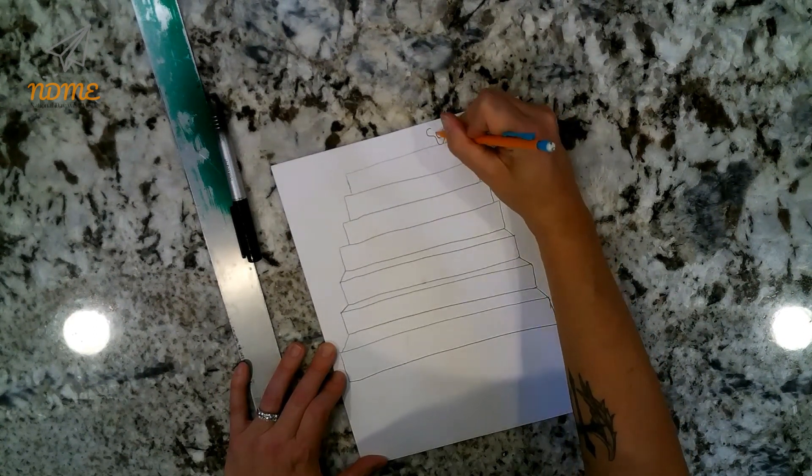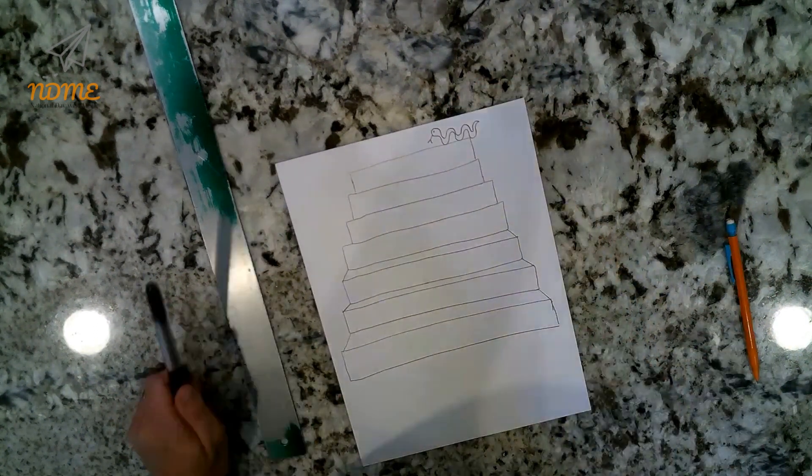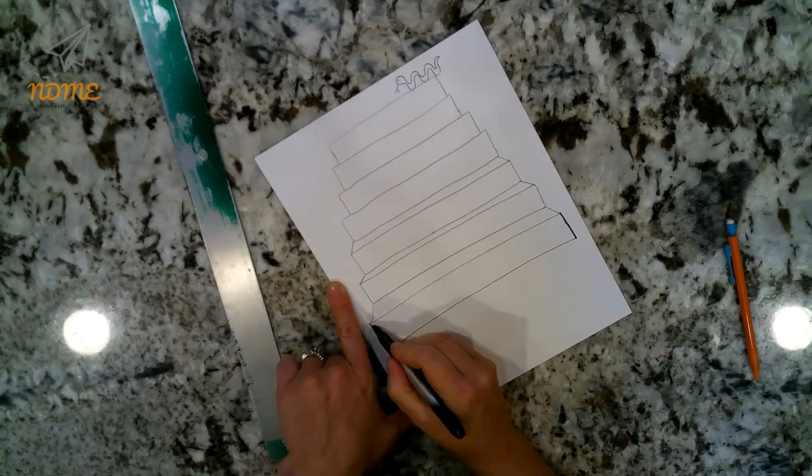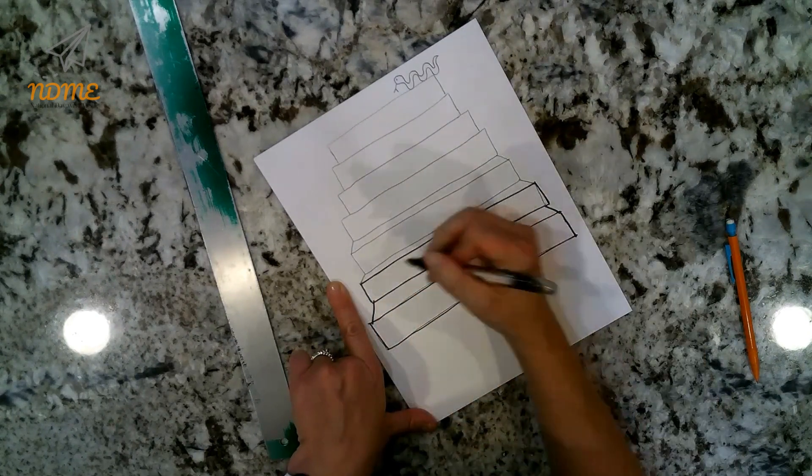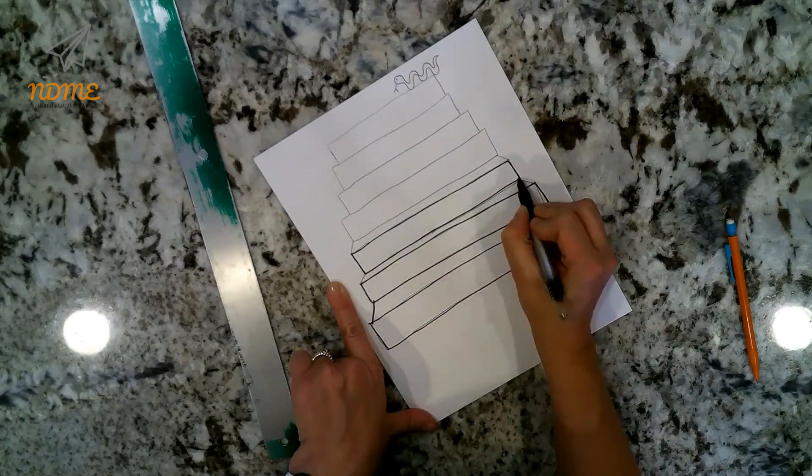Now, because this is me focusing on my fear of snakes, I went ahead and drew a snake at the top as what my goal is as I climb up the stairs. And then I went ahead and outlined the stairs with black marker.